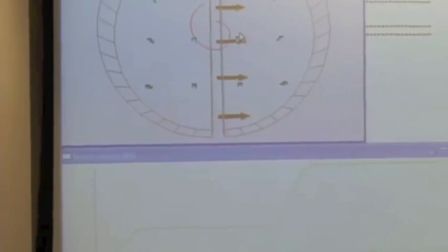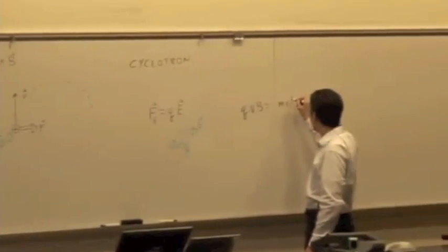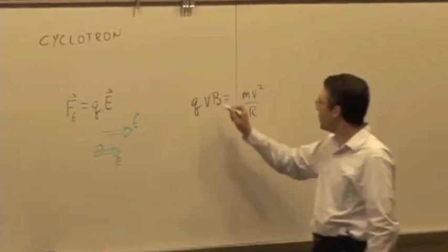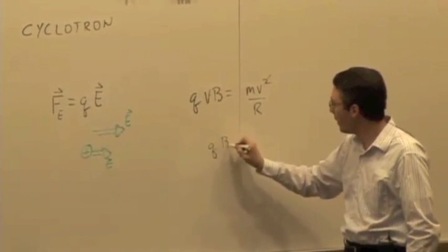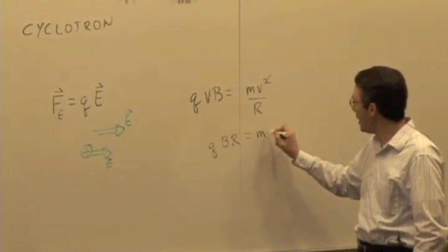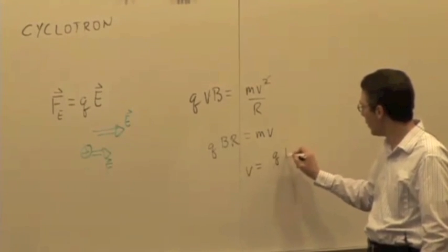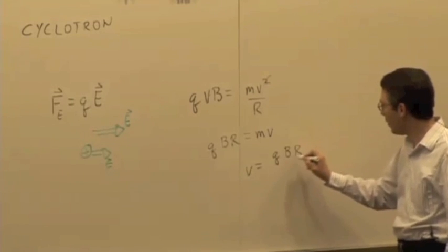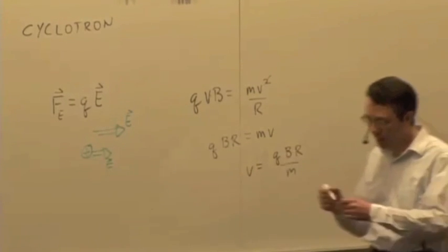It increases the speed, and we saw last time, we worked out how QVB equal to MV squared over R. And so there was a relationship between the speed and the radius. So V we could calculate as equal to Q B R over the mass of the particle. The faster it's moving, the bigger the radius it's going to get.